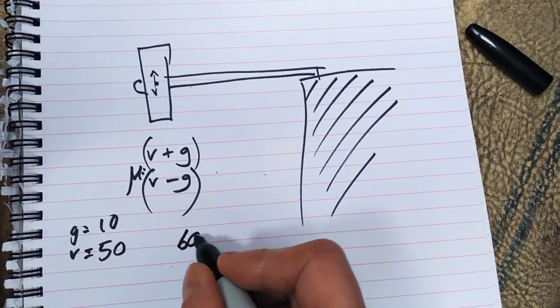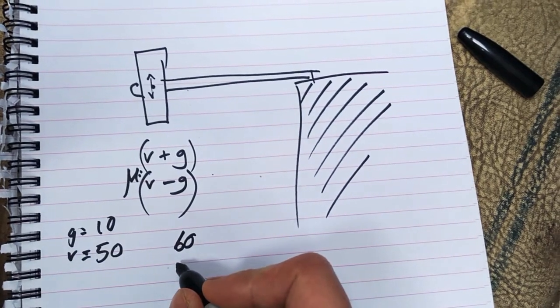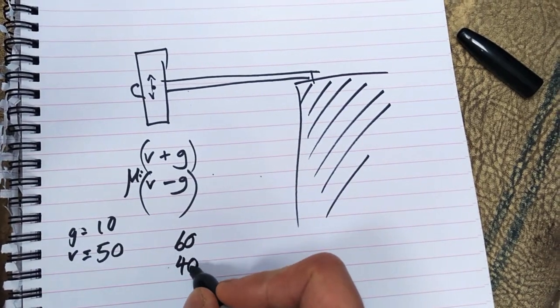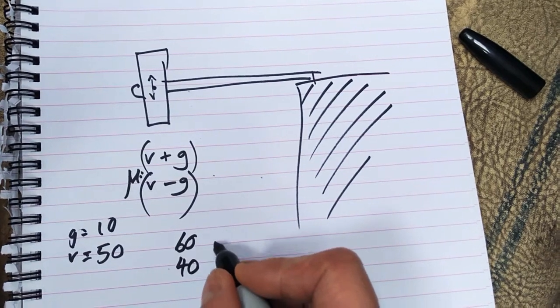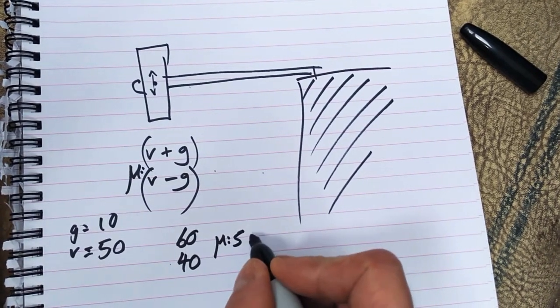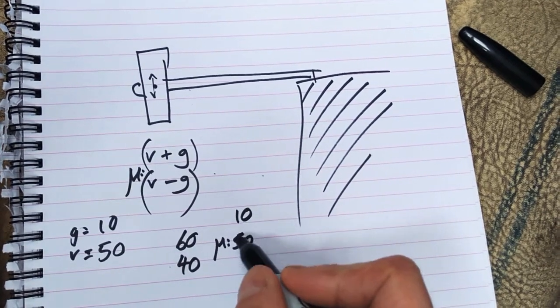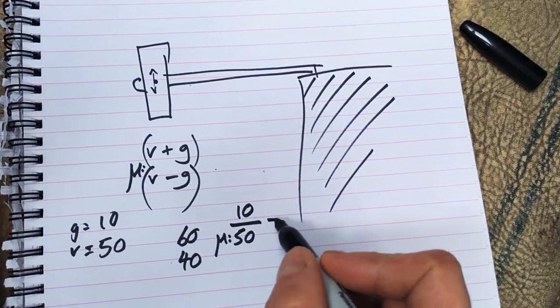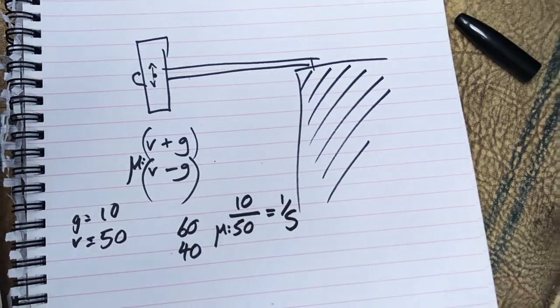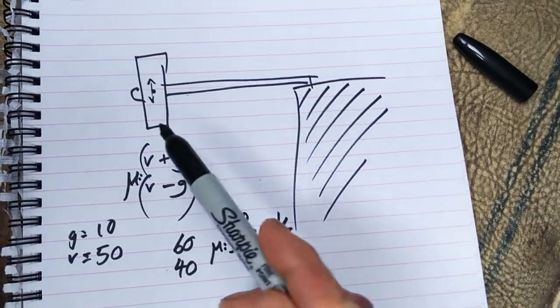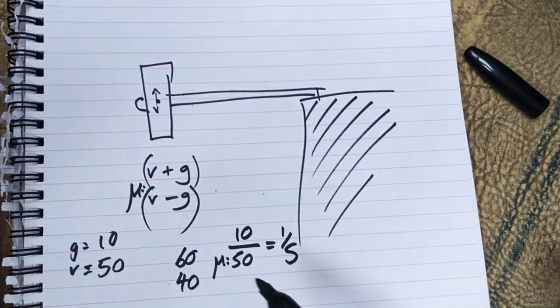The average is 50 and gravity is only 10. 10 over 50 is one fifth. Gravity's effects will only be a fifth. It dilutes it to a fifth, and the faster it spins the smaller this amount gets.